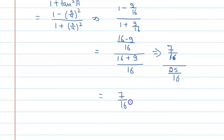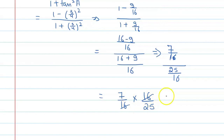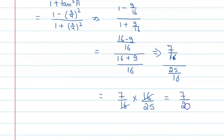Simplifying, we get 7 upon 16 multiplied by 16 upon 25. The 16s cancel, and we get 7 upon 25. So the value of the left-hand side is 7 upon 25.